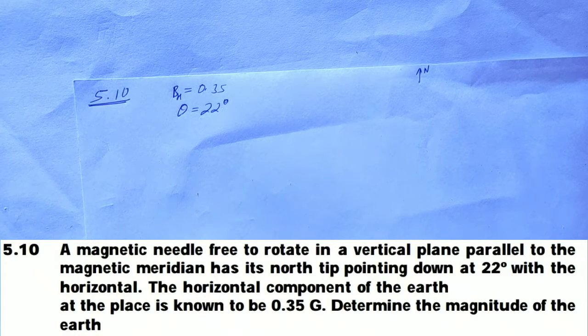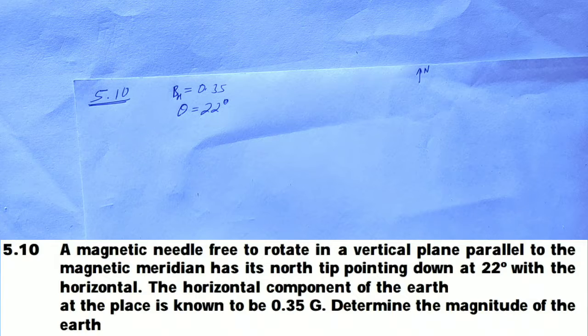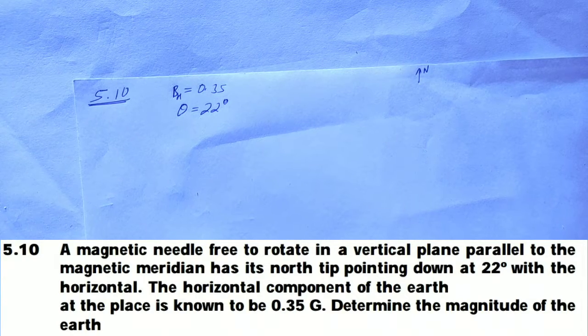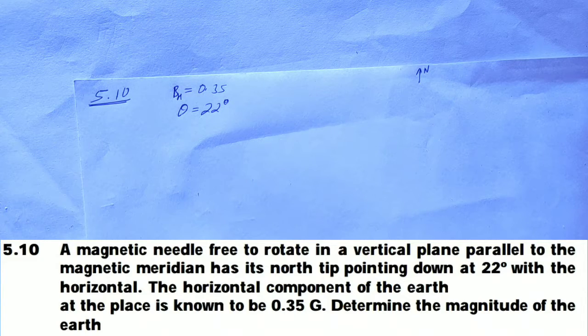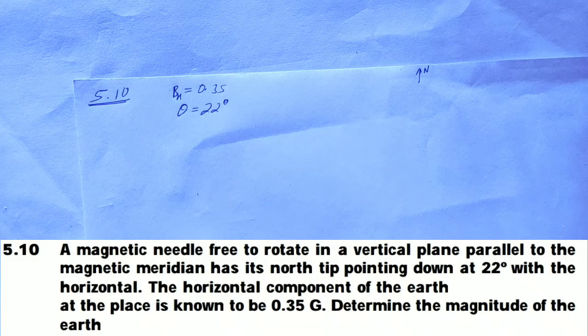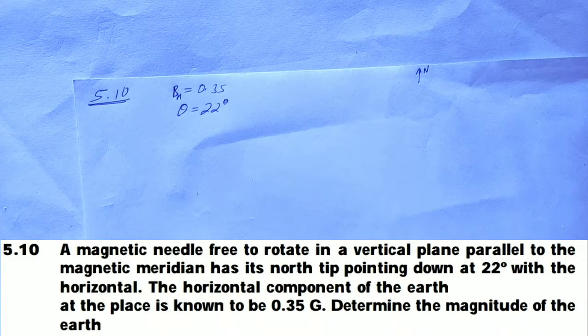A magnetic needle free to rotate in a vertical plane parallel to the magnetic meridian has its tip pointing down at 22 degrees with the horizontal. The horizontal component of the earth's magnetic field is 0.35 gauss. Determine the magnitude of the earth's magnetic field.